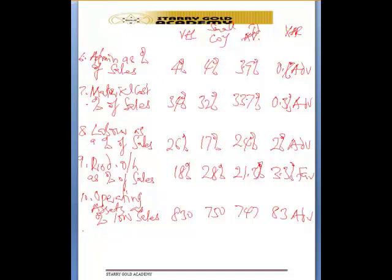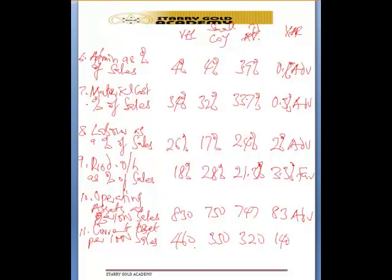The next one, item 11, is current assets per 1,000 of sales. You have 460, you have 350, you have 320, and you are going to have a difference of 140 — that is 460 minus 320 — also 140 adverse.